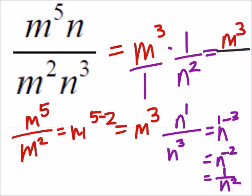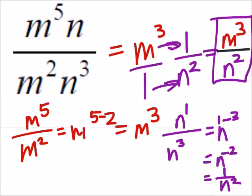It should really look like this, m cubed over 1 times n squared is n squared. Some of you wouldn't need to multiply the ones, because you just know how that works. Multiply the numerators and denominators.